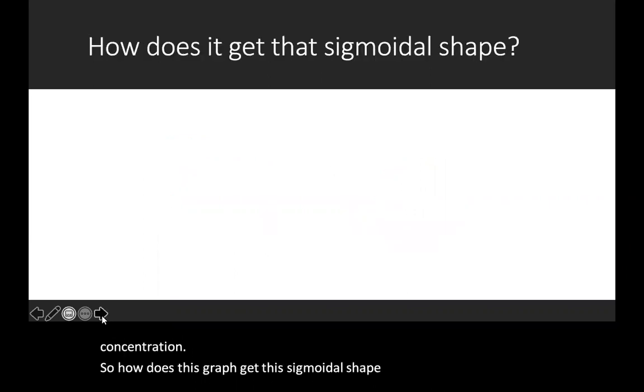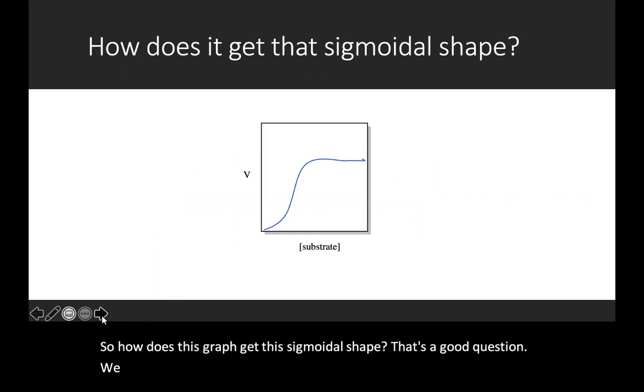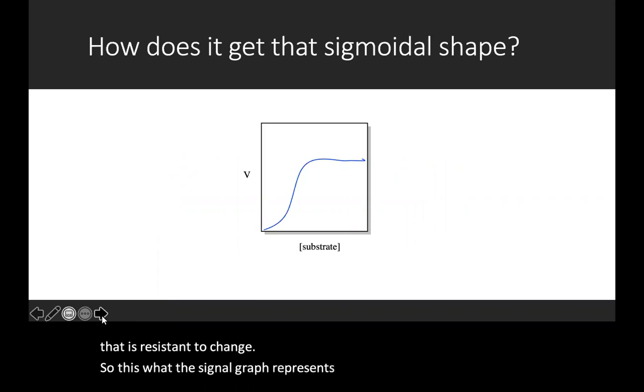Well, that's a good question. We can think of it as an adaptive response or an adaptive system, or a system that is resistant to change. So what the sigmoidal graph represents is a combination of two things.